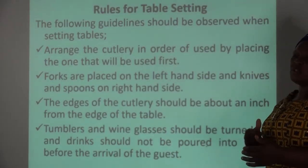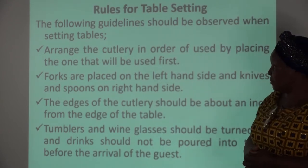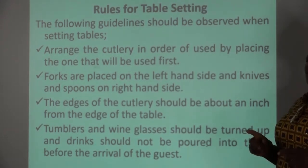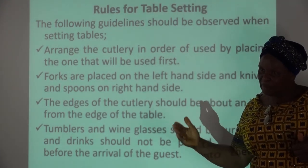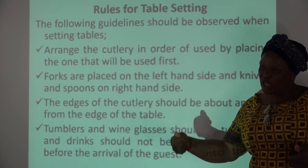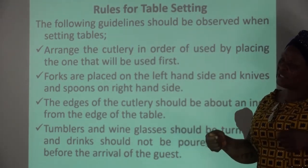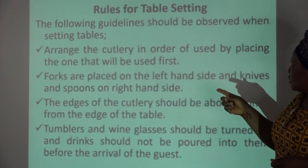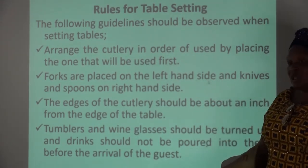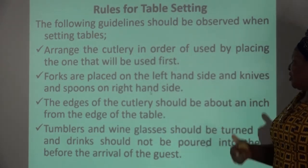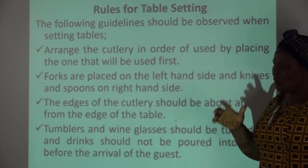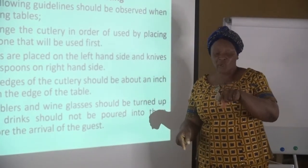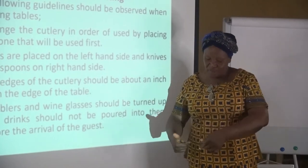Now, rules for table setting. There are many rules we must observe. Number one: arrange the cutlery in order of use, placing the ones that will be used first at the front. Forks are placed on the left-hand side, and knives and spoons on the right-hand side. The edges of the cutlery should be about an inch from the edge of the table.